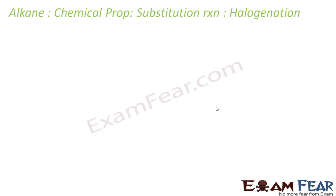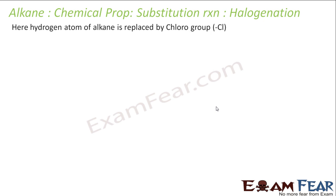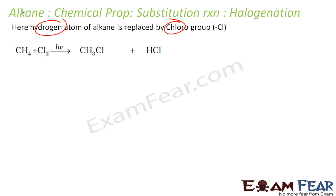Let's start with halogenation. It is a free radical reaction where the hydrogen atom in the alkane is replaced by a halogen — chlorine, bromine, or iodine. There are three stages: chain initiation, chain propagation, and chain termination. We have seen this free radical reaction in the previous chapter. We have chlorination, bromination, and iodination — all different kinds of halogenation reactions.